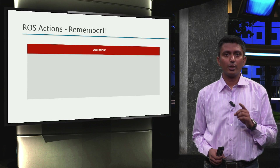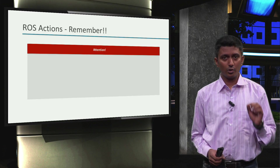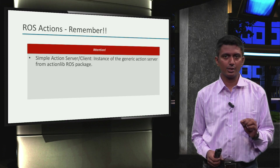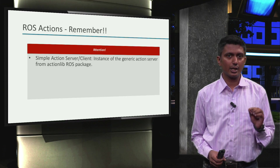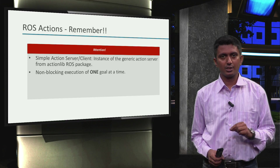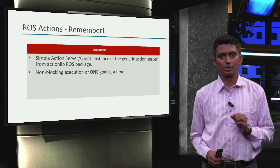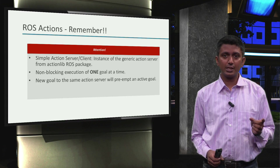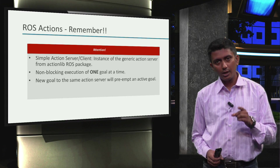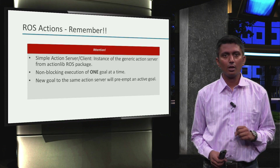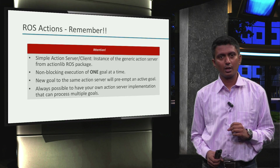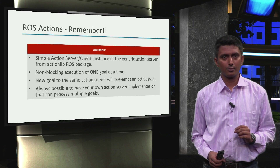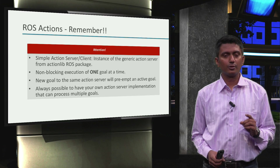A few important things to remember: what we have learned involves the simple action server and action client, which is just an instance of the generic action server or client implementation in the actionlib package. The simple action server enables non-blocking execution of one action goal at a time. If a new goal is sent to an action server that's already busy processing a goal, the currently active goal will be preempted. But this is not a hard limitation — as users, we can always have our own action server implementation that can process multiple goals. Alright then, see you soon for the code illustration.